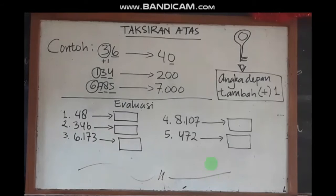Kita ulangi lagi langkah untuk taksiran atas adalah: angka yang di depan tambahkan 1. Kemudian angka yang di belakang — jika 1 angka maka menjadi 1 nol; 2 angka ubah semua menjadi 0, ada 2 nol; 3 angka jadi 3 nol.